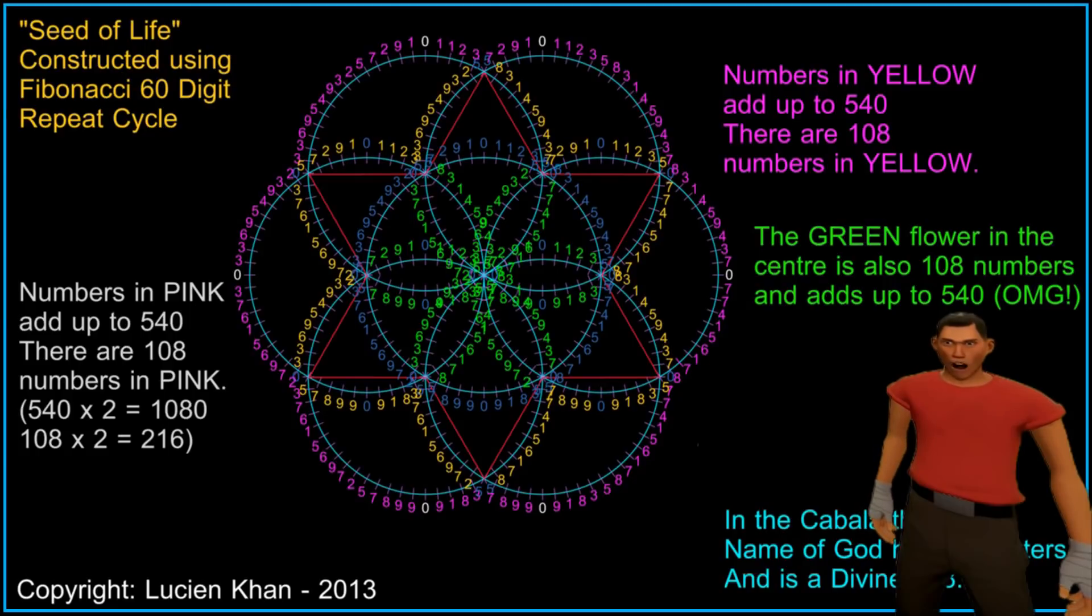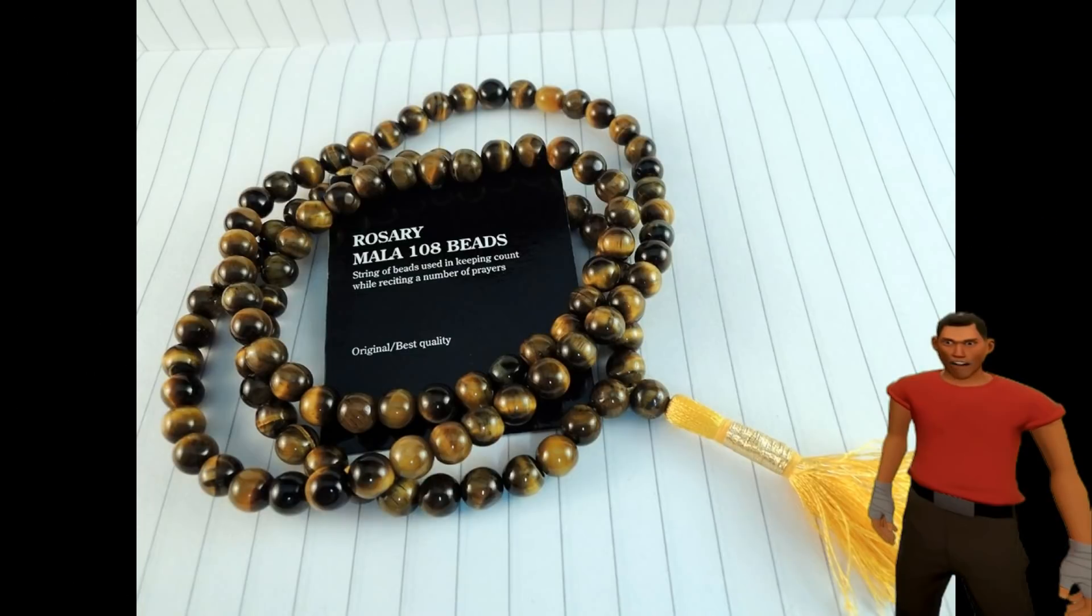But it is not only that the flowers are all magically made up of 108 numbers, or that they all add up to 540, that is astounding. The sacred history of these numbers themselves are profound.